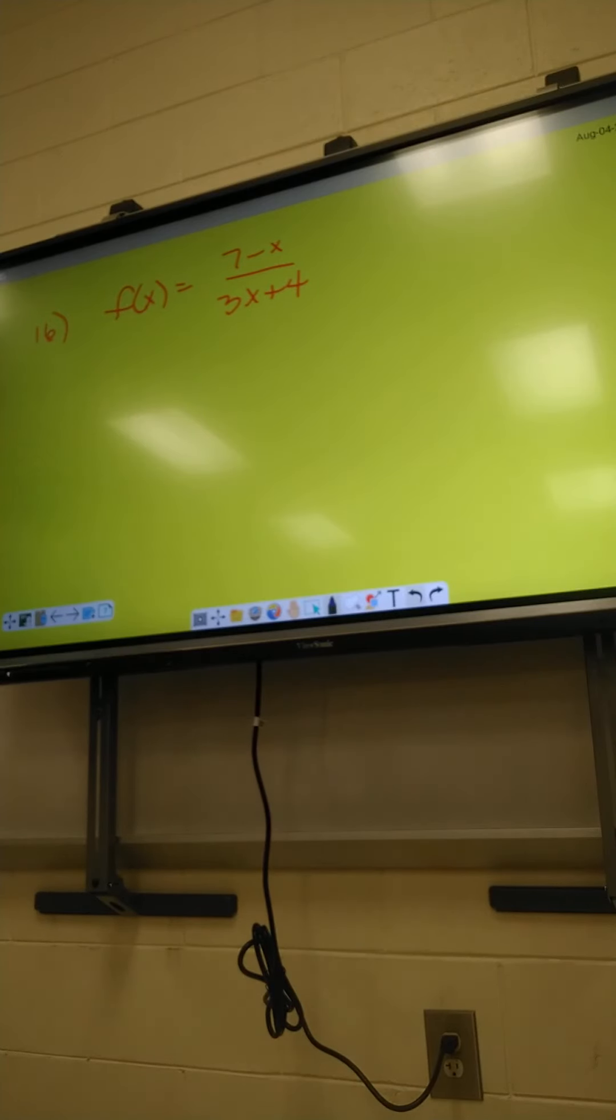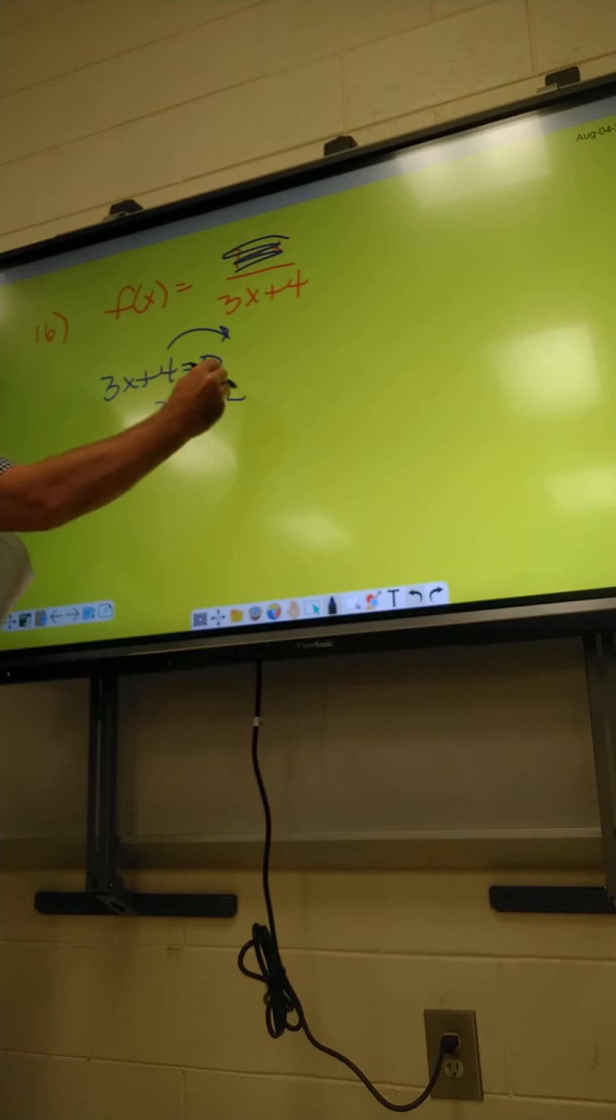Alright, let's start on 16. Alright, first step. Everybody mark off number 13 and number 15 off the back. Those are not on the quiz, so we're not going to work them up. Alright, 16 is on the quiz. Do y'all remember how we started this one yesterday? Ignore the top. All you got to do is take the bottom and set it equal to 0. Alright, now let's solve for x. What happens to plus 4 when you move it over? It becomes a negative 4.